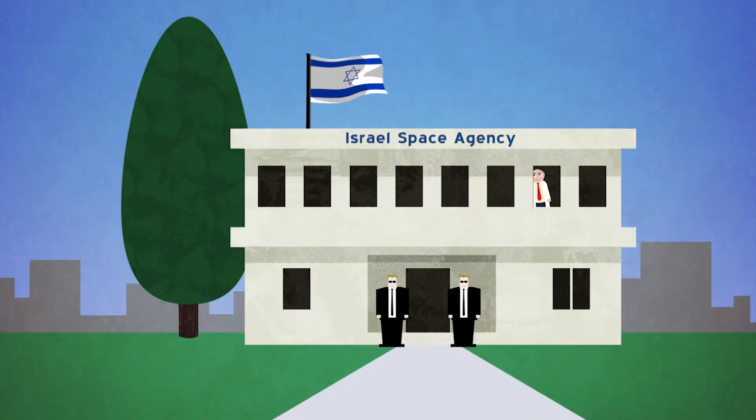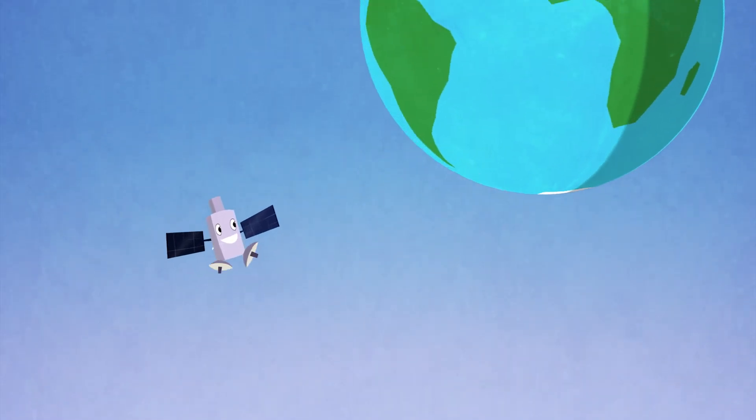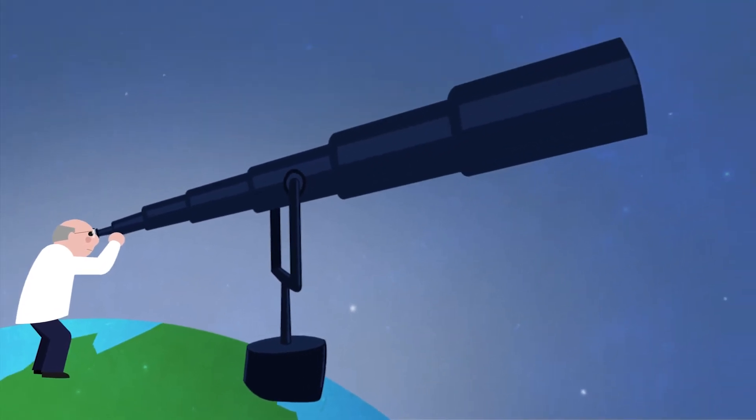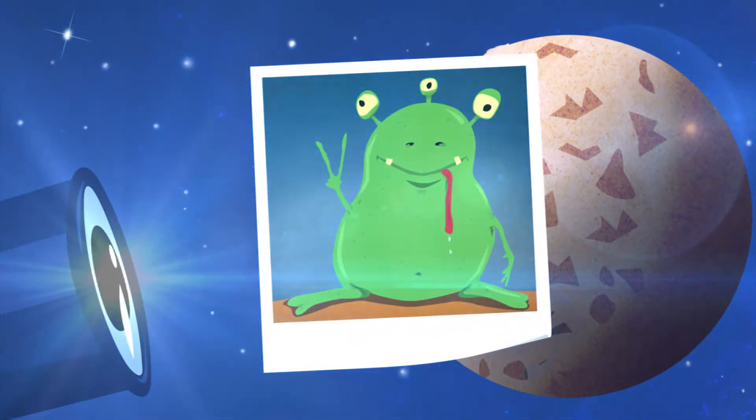Due to Israel's space agency, Israel has developed unique lightweight satellites for environmental, communications, and research purposes. Using powerful telescopes and special space cameras, the agency monitors water and ground pollution, and researches the universe.